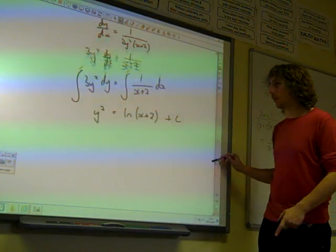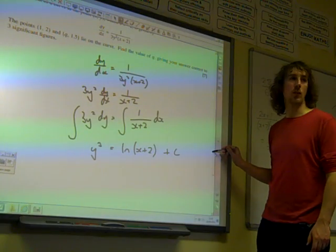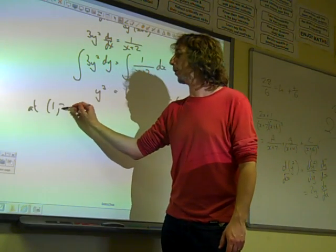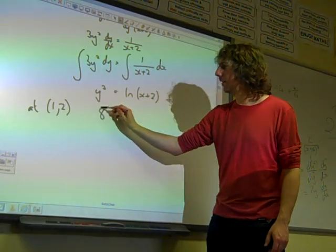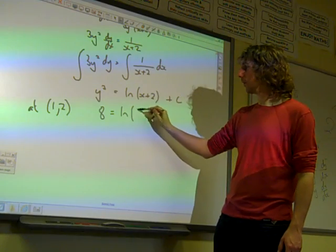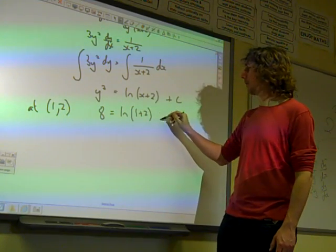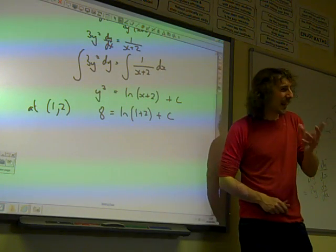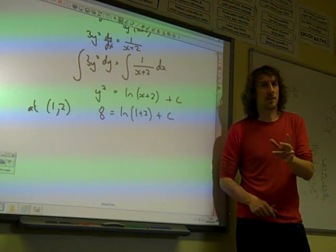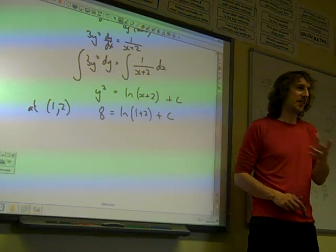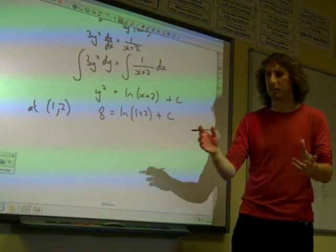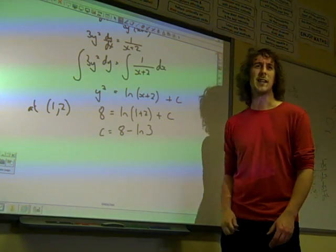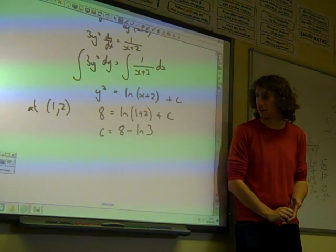Right, there's our general solution of the differential equation. We are told that it passes through the point (1,2). So that's the point (1,2). We've got that 8 is the natural log of 1 plus 2 plus c. It's amazing how often the constant drops out to be something really neat. You know, it's either 0 or it's something really nice. This one isn't. It's 8 minus the natural log of 3. That's it, that's what we've got. There we go.